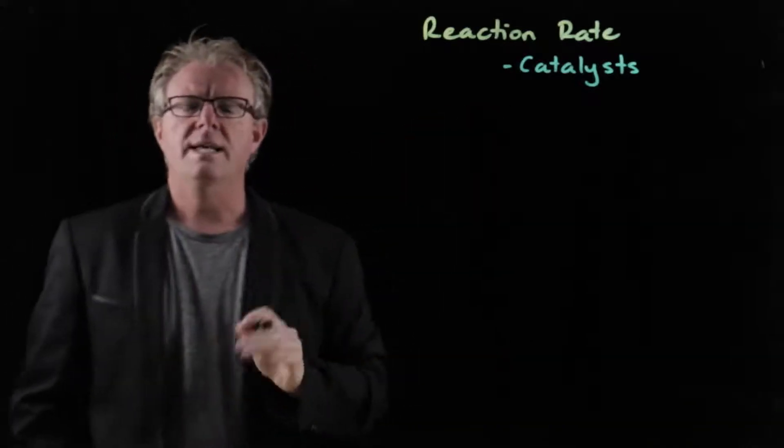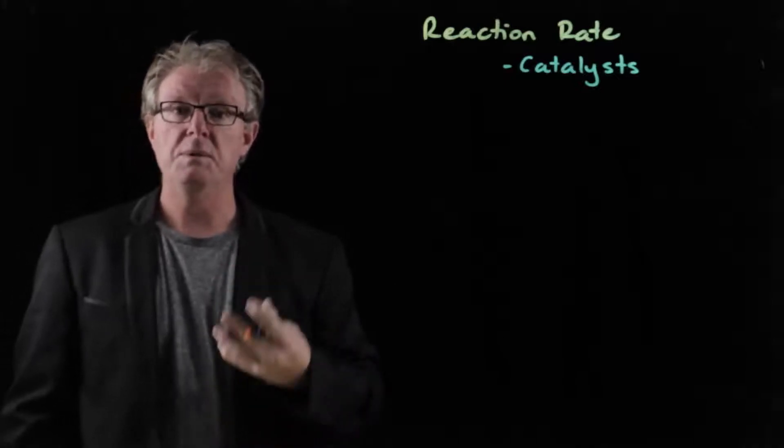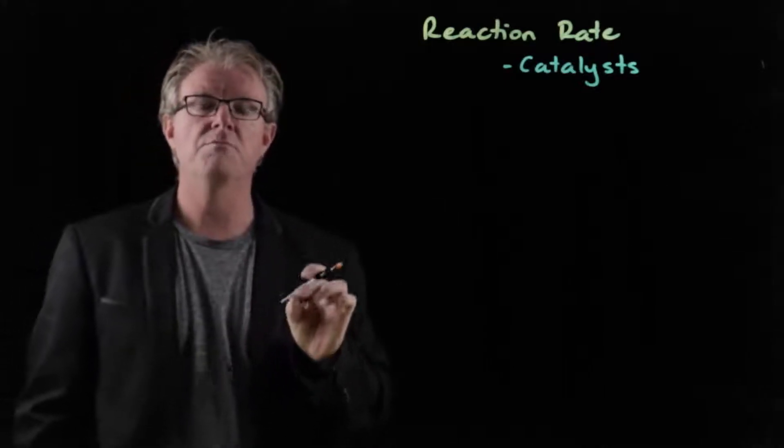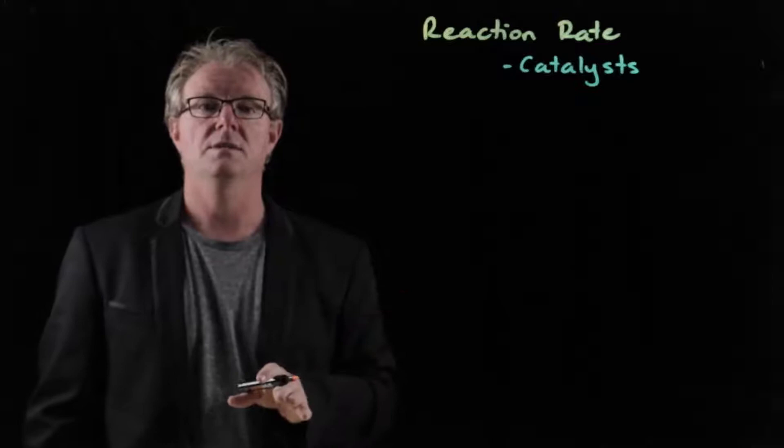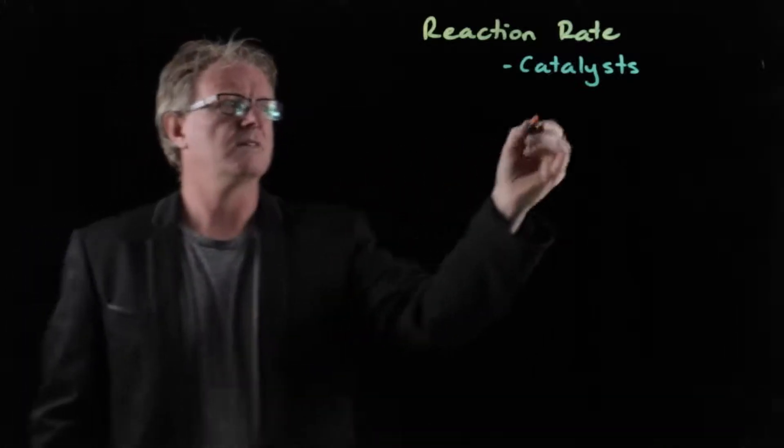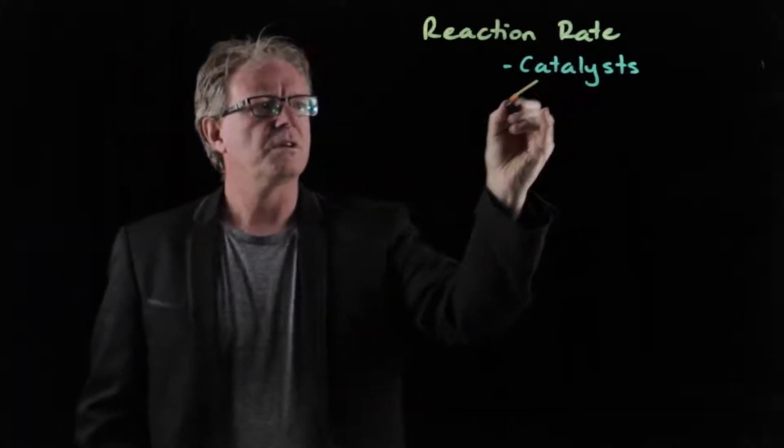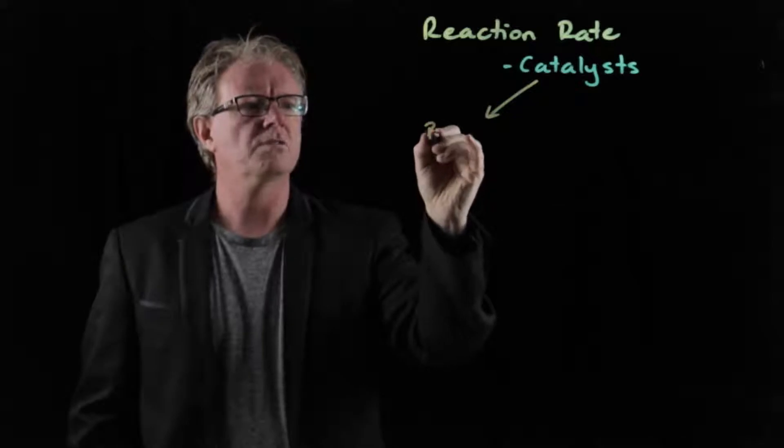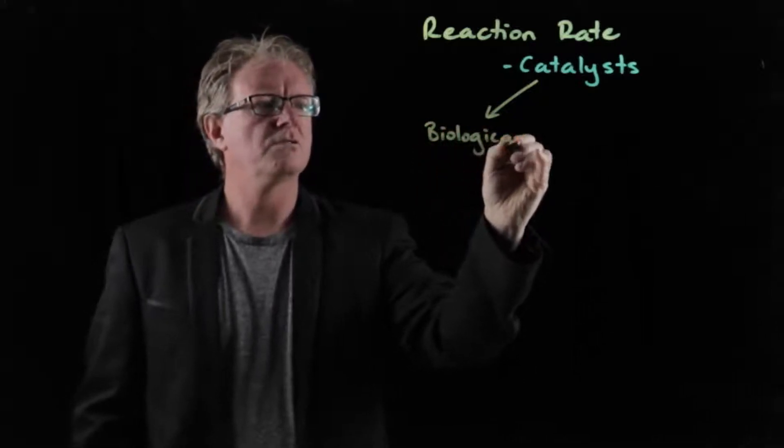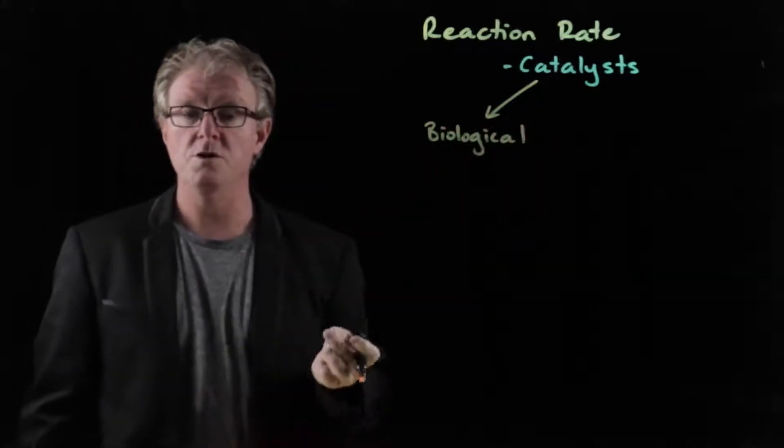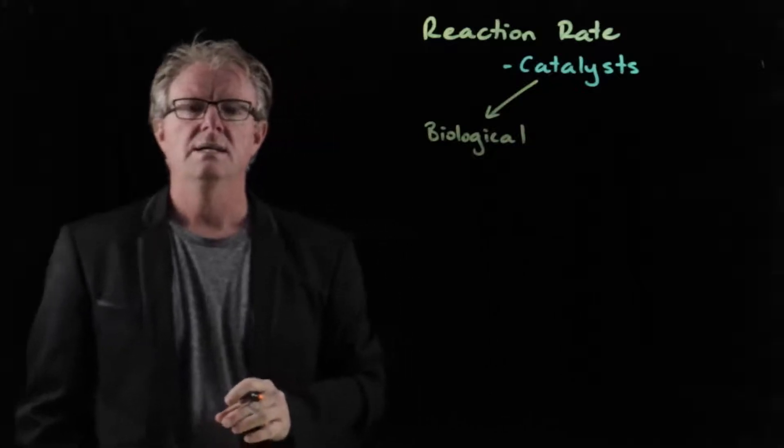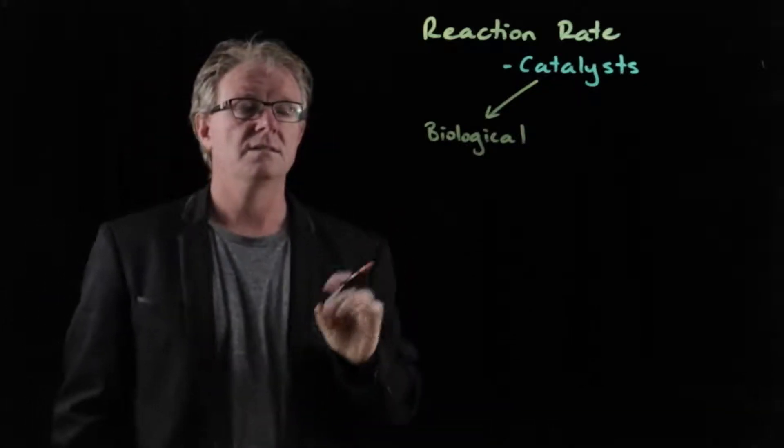So what is a catalyst? Well, a catalyst is a chemical substance that speeds up a reaction without itself being used up by the reaction. There's two main types of catalysts. The first one is a biological catalyst, and a biological catalyst you've probably come across or heard the term enzymes before. So they are protein-based catalysts.